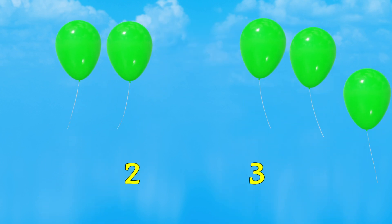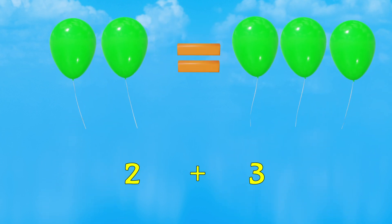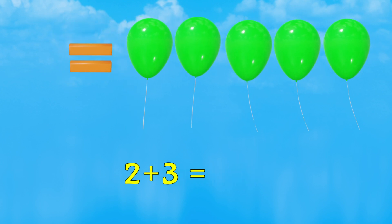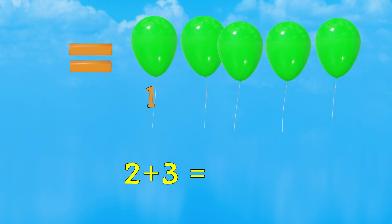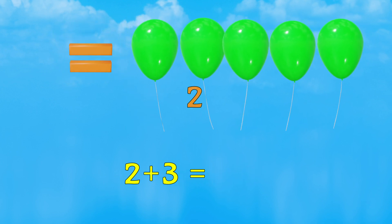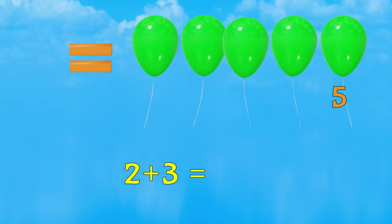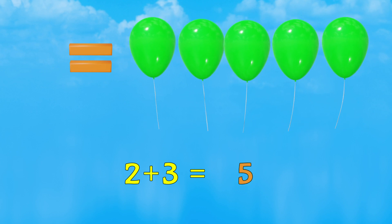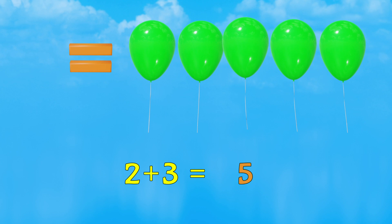2 balloons plus 3 balloons equals. Let's count the result. 1, 2, 3, 4, 5. So, 2 plus 3 equals 5.